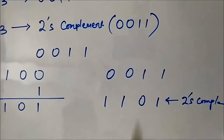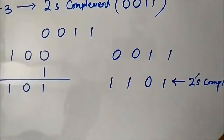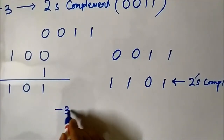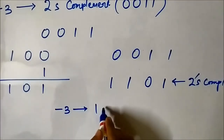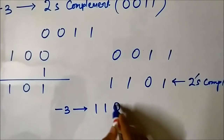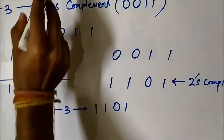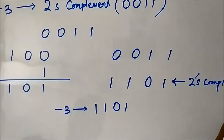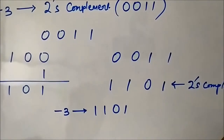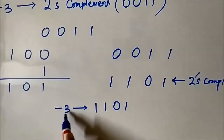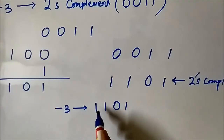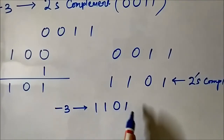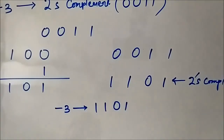So the negative number -3 is represented as 1101, which is the 2s complement of 0011. This is the important result: -3 is represented as 1101 in the 2s complement system.